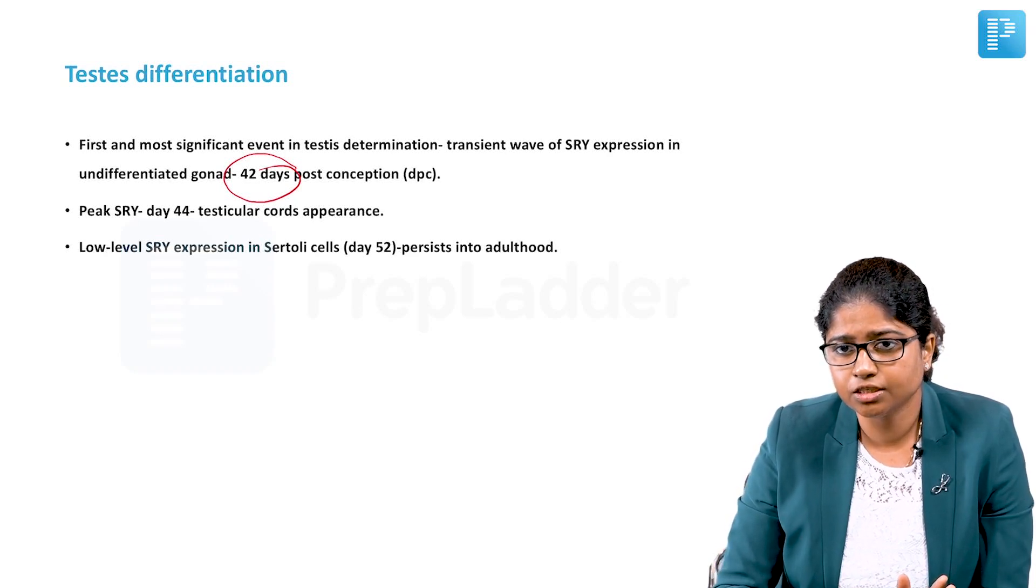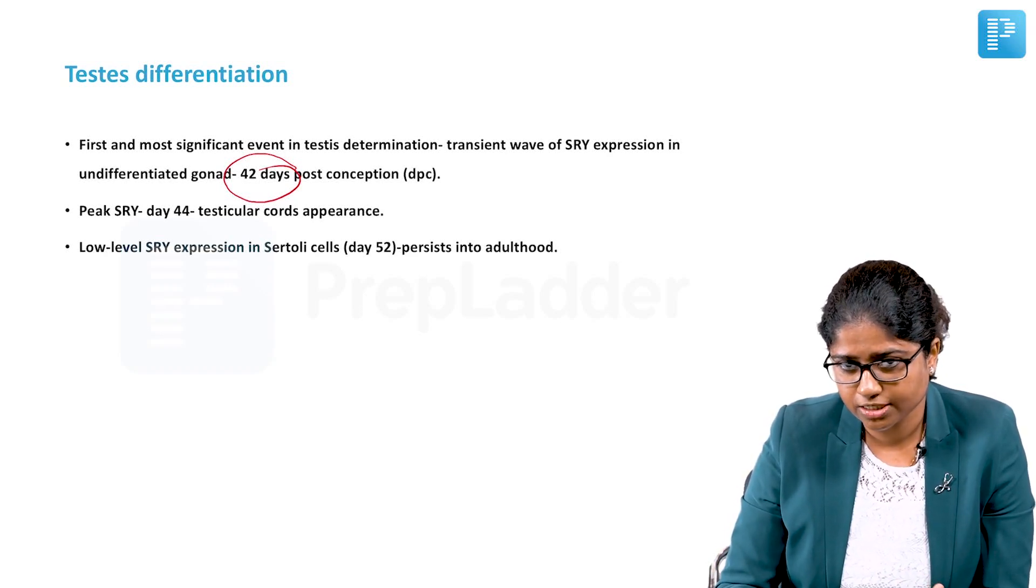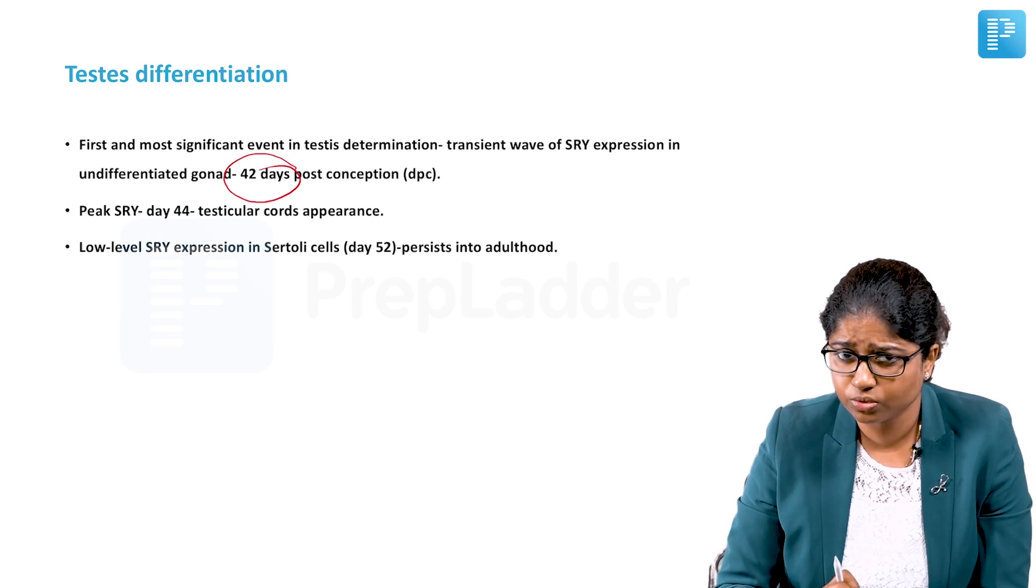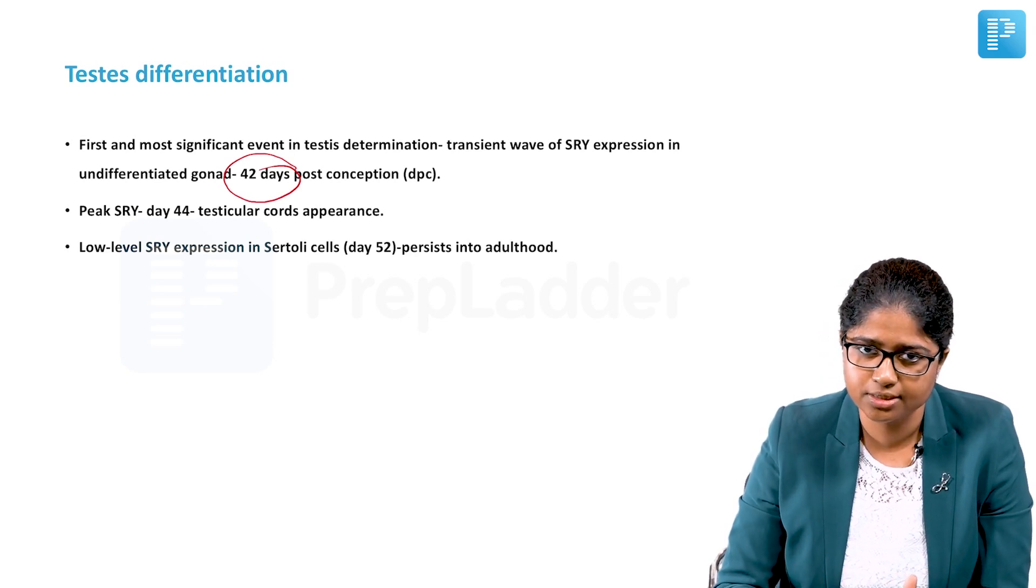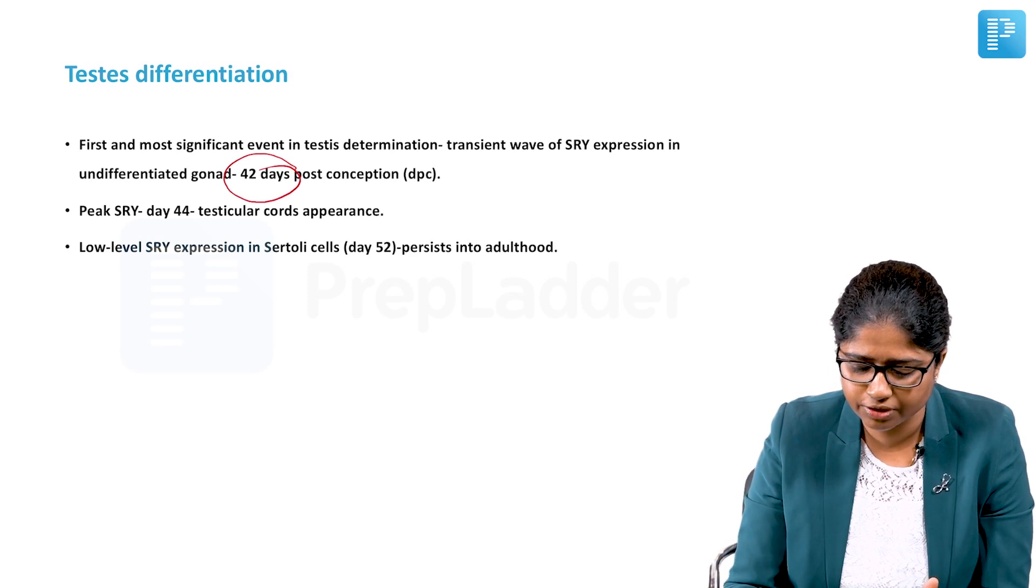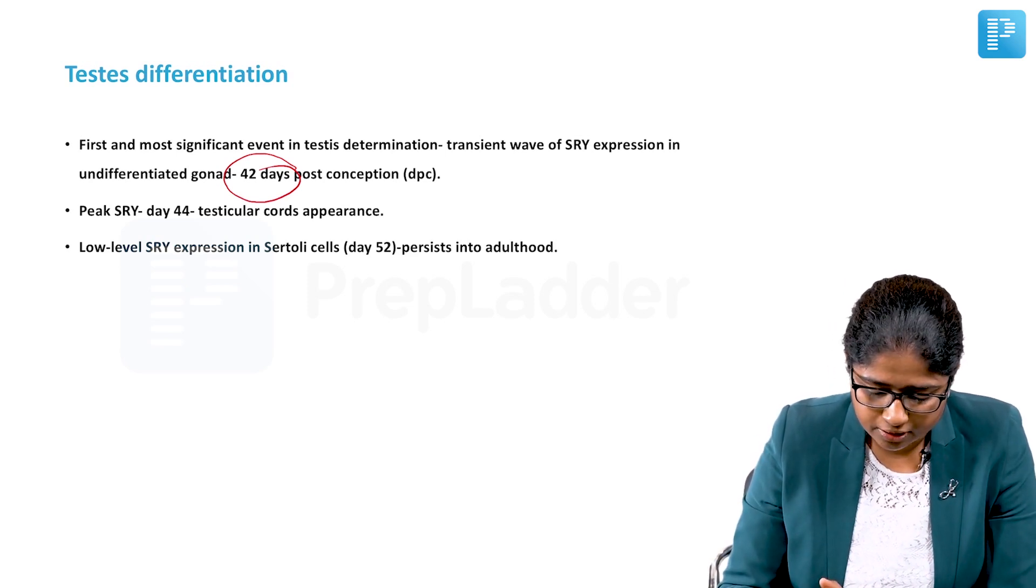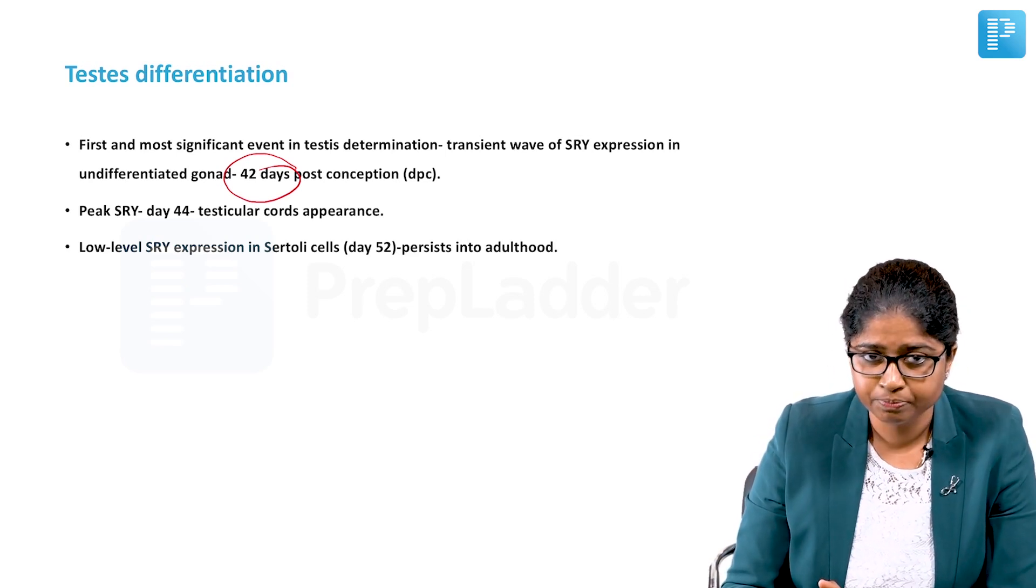The first event that happens is a transient wave of SRY expression. As I talked about the SRY gene, it is one of the most important genes for testis determination, and so there is a transient wave of SRY expression in the undifferentiated gonad.